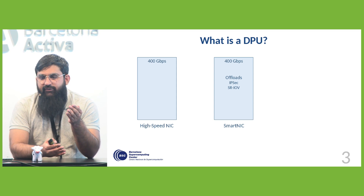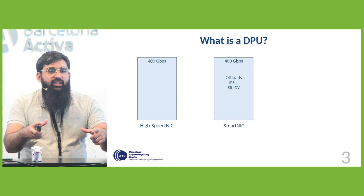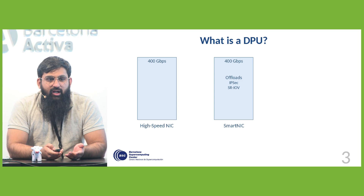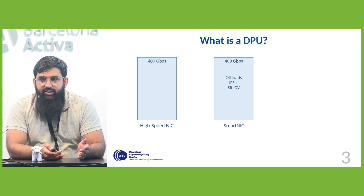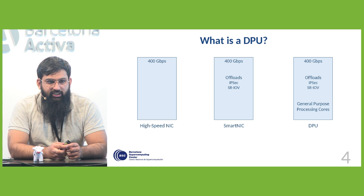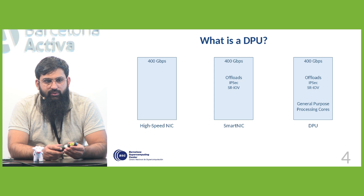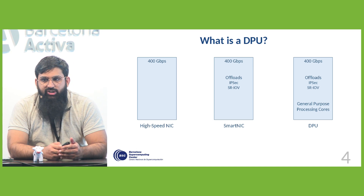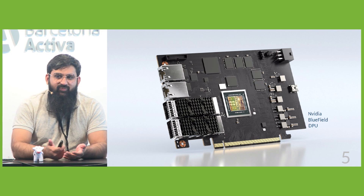Many cards — most cards — have InfiniBand RDMA offloads where the NIC makes the packet, but even these kinds of offloads do not make a device a network DPU. It has to have a general processing unit, like either an FPGA or some general-purpose core running an OS.